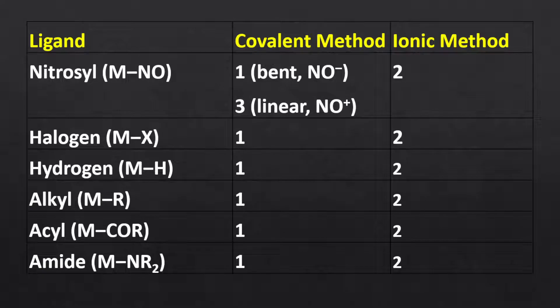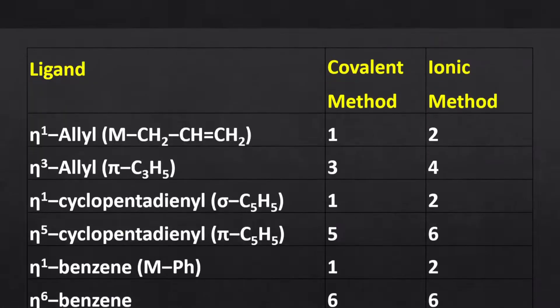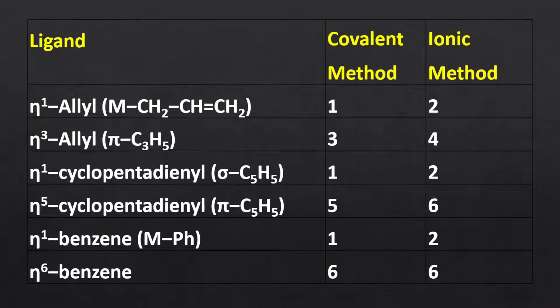Ligands such as halogen, hydrogen, alkyl, acyl, and amide use sigma electrons only during bond formation with the metal. Thus, they are 1 electron donors. Allyl, cyclopentadienyl, and benzene can be single electron donors or multi-electron donors depending upon whether the delocalized electrons of the cyclic ring are involved in bond formation with the metal or not.